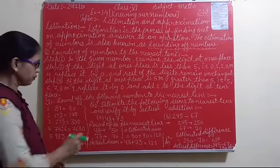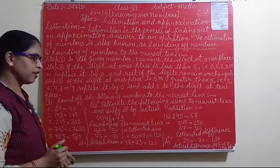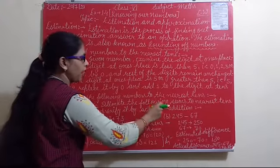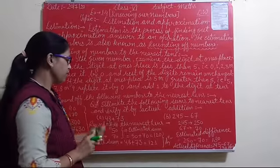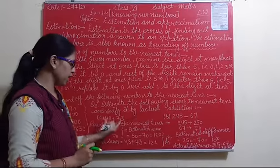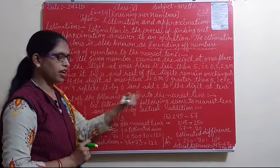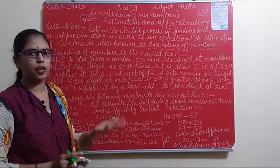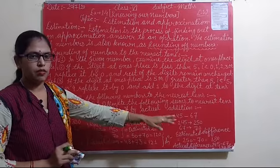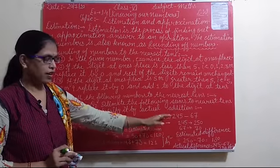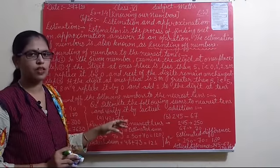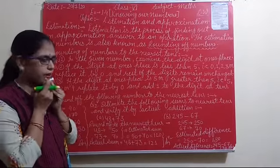I hope you understood how to convert numbers to the nearest 10. Now, second question: Estimate the following sums to the nearest 10 and verify it by actual addition and subtraction. You need to solve these using nearest 10 rounding, and also find the actual sum or difference, then compare the two answers.